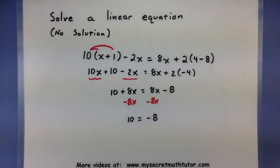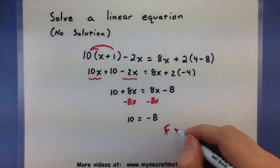Now, when you eliminate all of the variables like that, you should get a clue that something fishy is going on. Since I've eliminated my x's, this final statement gives me a lot of information about my solutions. When I look at it, 10 equals negative 8, I can see that it's a completely false statement. 10 is definitely not equal to negative 8.